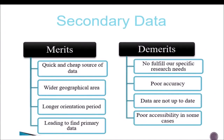The advantages of secondary data: it is a quick and cheap source of data — cheap because you don't have to compensate someone to go collect it. It also covers a wider geographical area because these data tend to have much larger coverage; for example, data from a whole country or community of thousands of people, compared to primary data where you collect only a sample from that population.